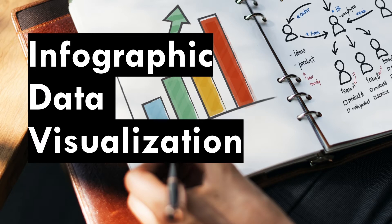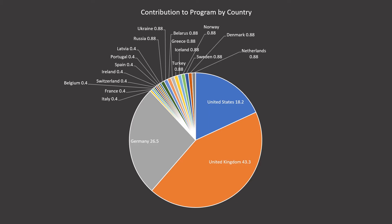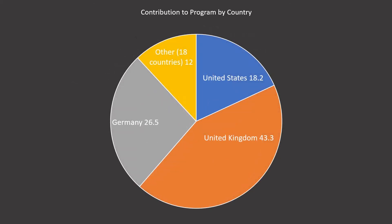For standard data visualizations — charts and graphs that you're familiar with — the key concept is to make them simple and accessible. If, for example, I am trying to show the relative contributions to a certain program by country and I present this on an infographic, that is going to be way too much detail. I need to simplify things to support my main point. If my main point is to highlight the major contributors, I should categorize all the much smaller contributors under one slice of the pie chart instead of making the graphic overly complex.